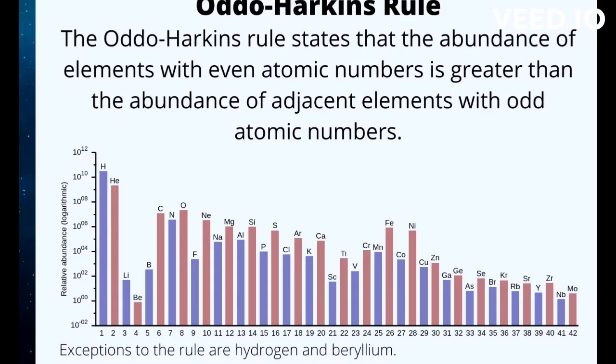In today's lesson we are going to learn more about Oddo-Harkins rule. The Oddo-Harkins effect states that chemical elements with even atomic numbers are more abundant than the adjacent odd atomic number elements.